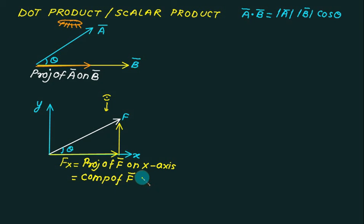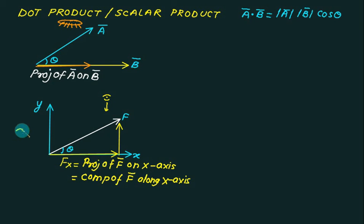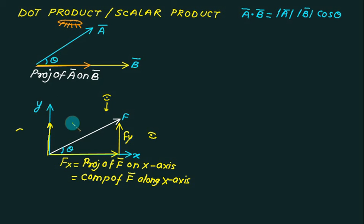The language is the same: projection means the same as component. If you are on this side and look at the force vector, the shadow comes here — this value is fy. So is this a component of F on the y-axis, or a projection of F on the y-axis? Component and projection are one and the same thing.